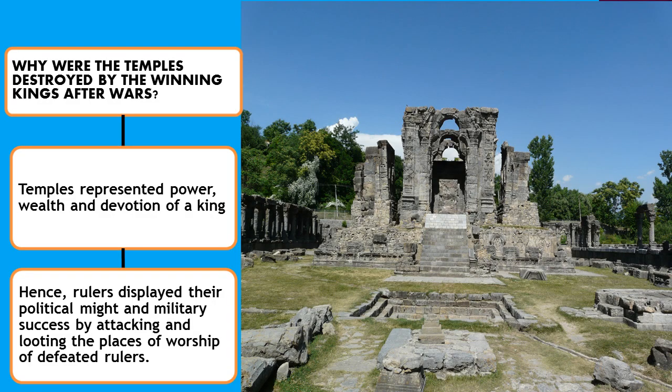Kings used to fight lots of wars, and after a war was over, the winning king used to destroy the temples constructed by the losing king. This is because temples represented the power, wealth, and devotion of a king. The winning king, in order to show that the losing king was very weak, used to destroy their temples.